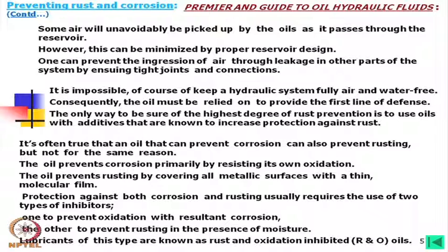Protection against both corrosion and rusting usually requires two types of inhibitors: one to prevent oxidation with resultant corrosion, and the other to prevent rusting in the presence of moisture. Lubricants of this type are known as rust and oxidation inhibitor oils, properly called R&O oil.